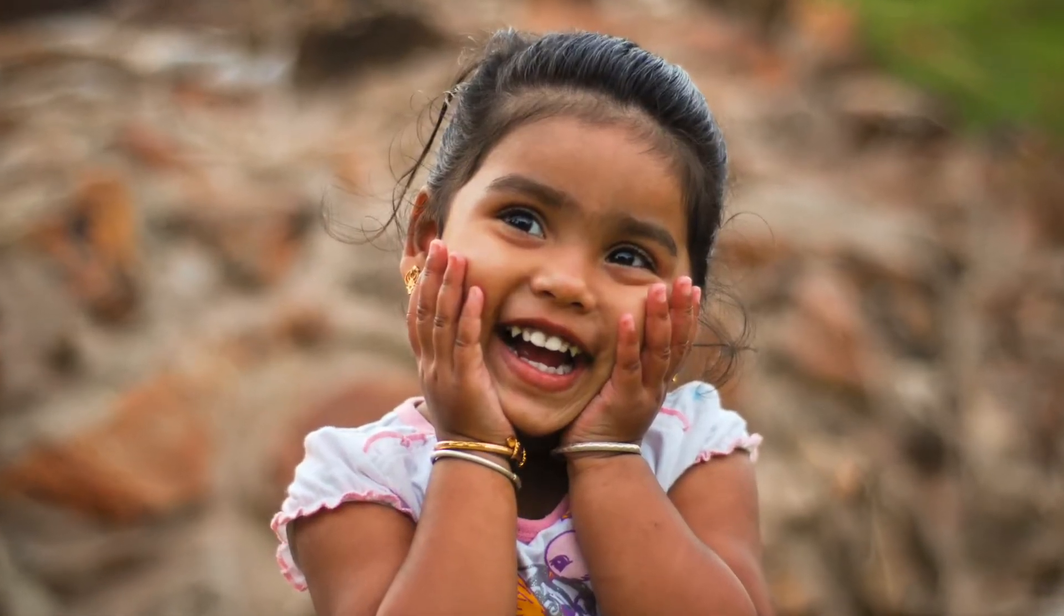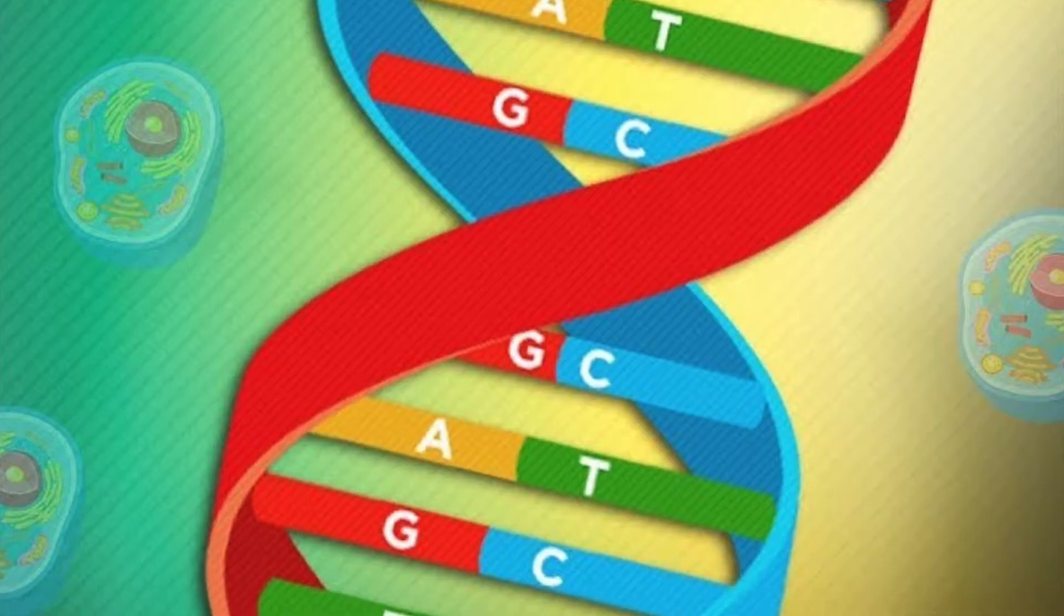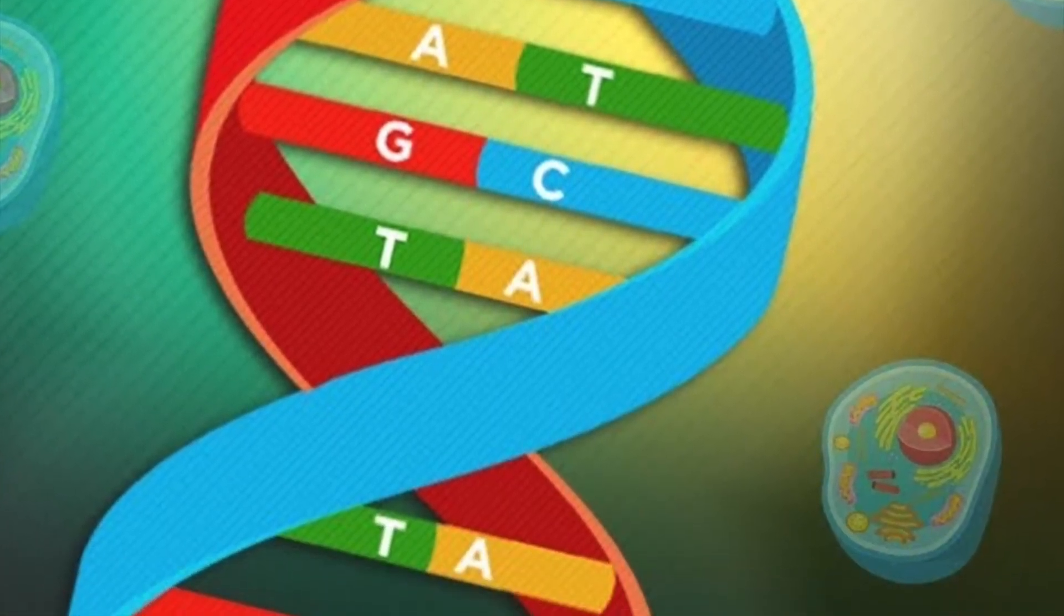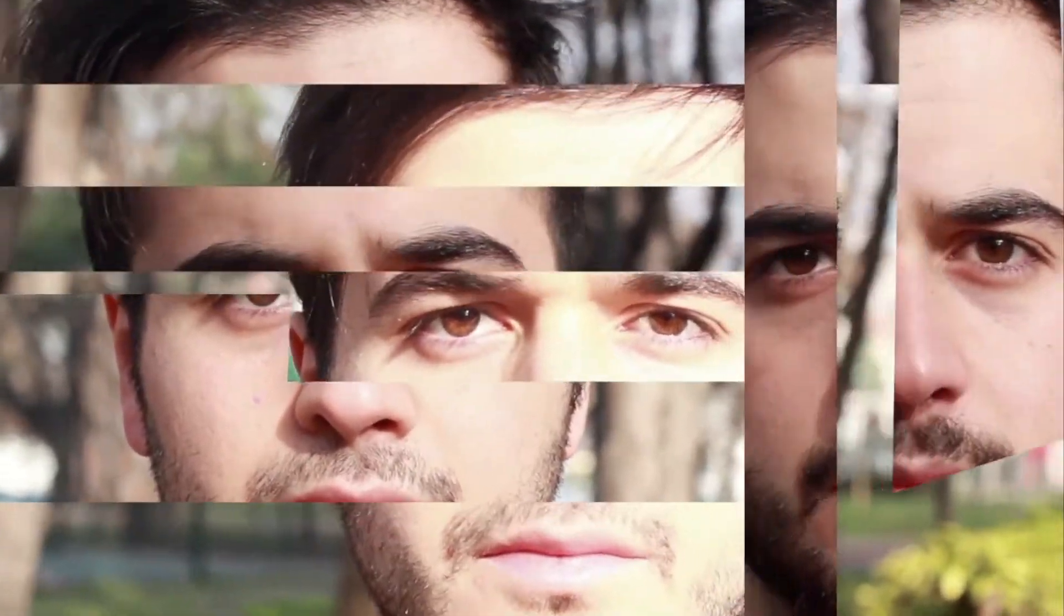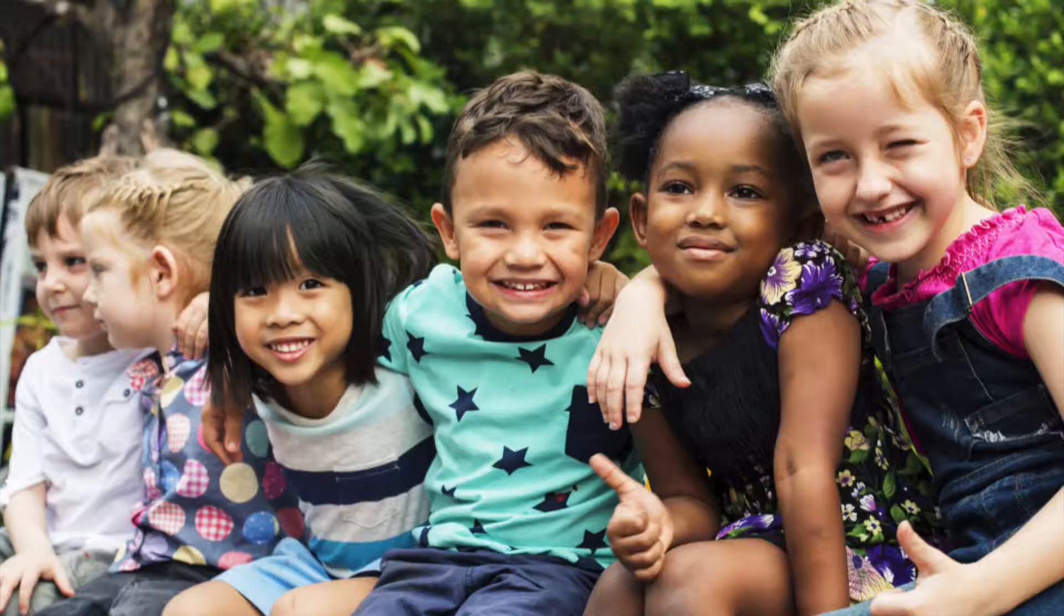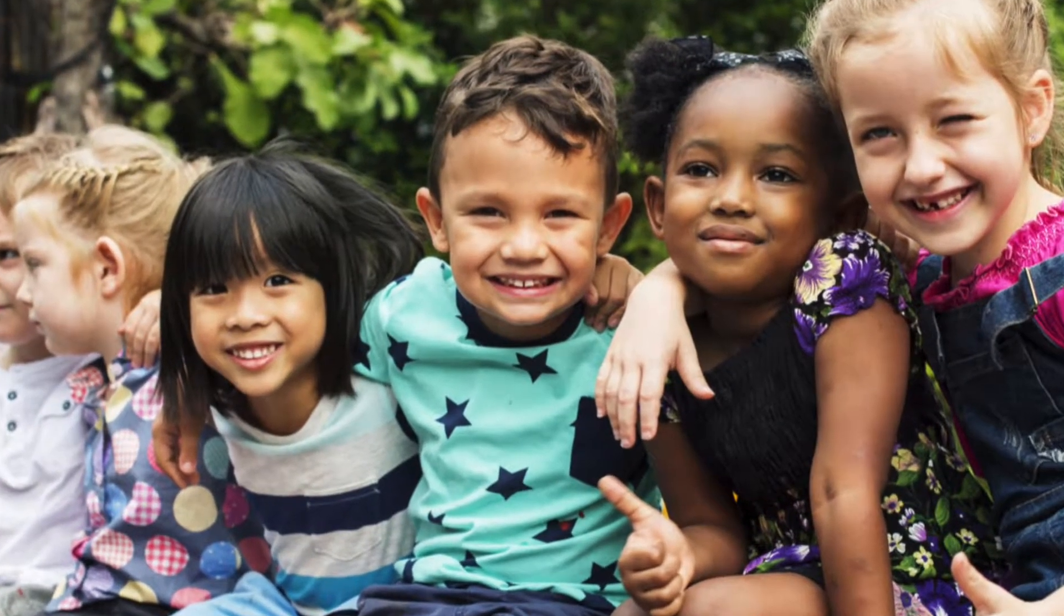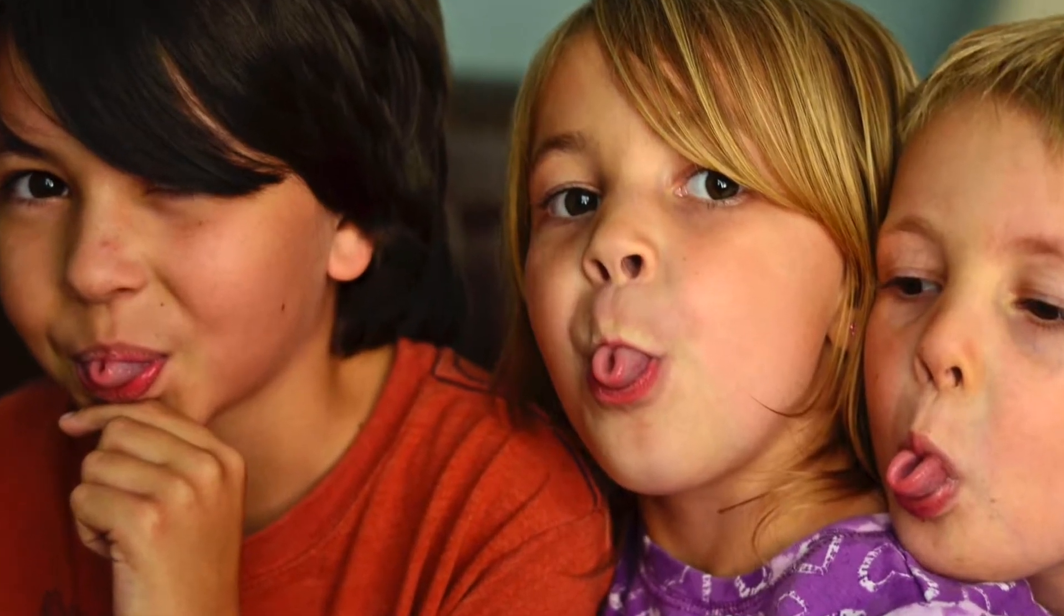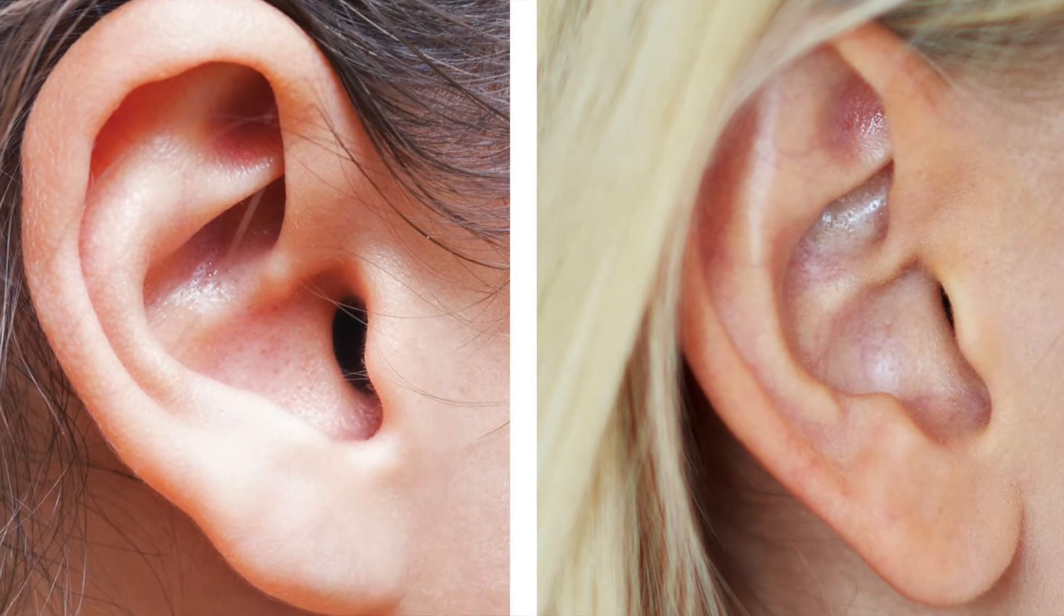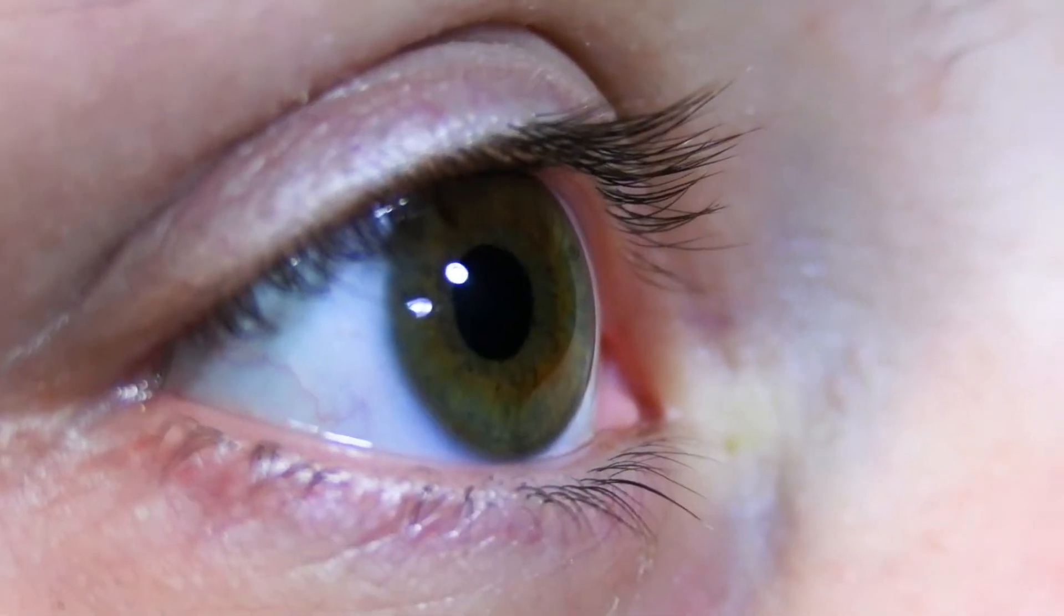This is your genetic blueprint and each individual instruction is a gene. Some of the genes tell your body how to shape your nose, what color your hair will be, if you can roll your tongue, if your earlobes are detached or attached, and much more.